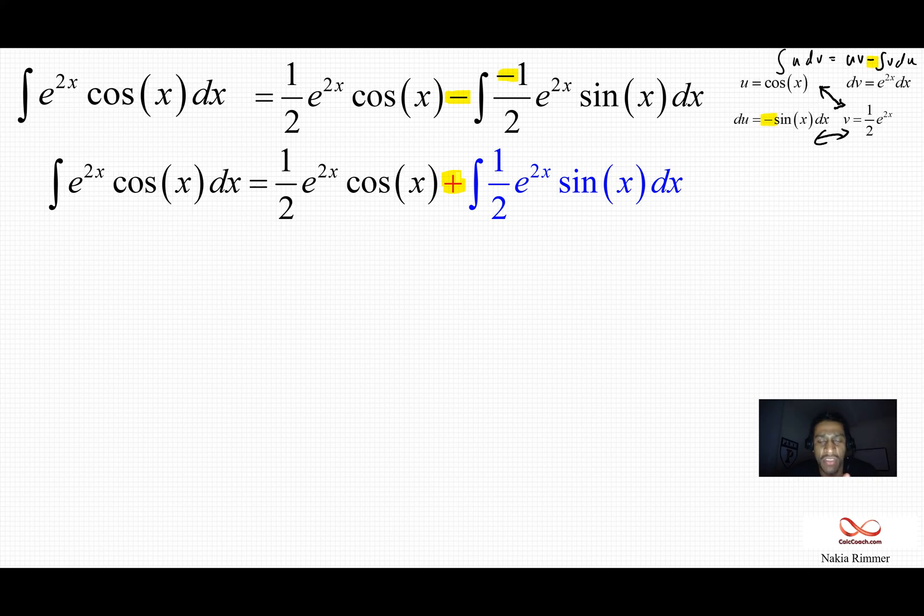Gotta be very careful with the signs on this question. Okay, I've turned the new integral blue. The part that is before that is just the product. There's no integral on that. I'm going to now address the blue integral. So what did I do? I had an integral of e to the 2x cosine x, and now I have an integral of e to the 2x sine x.